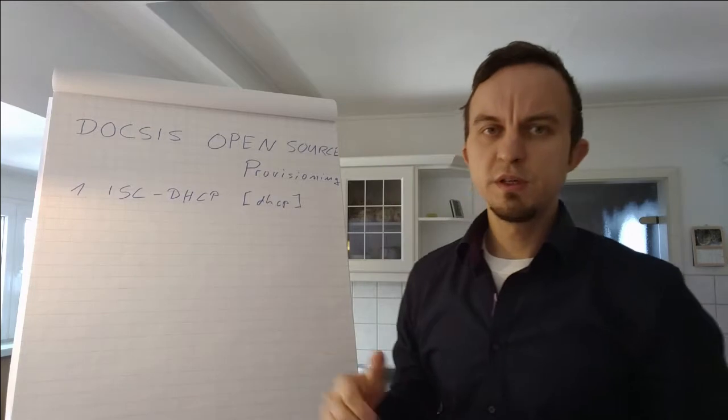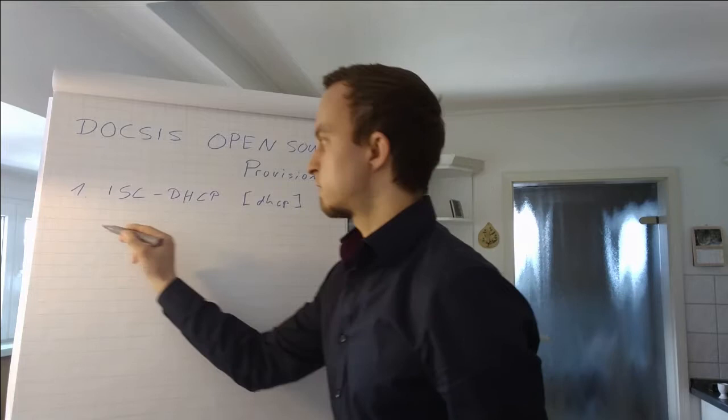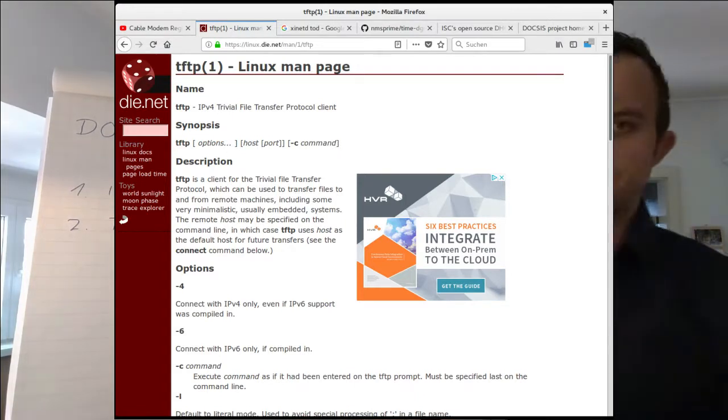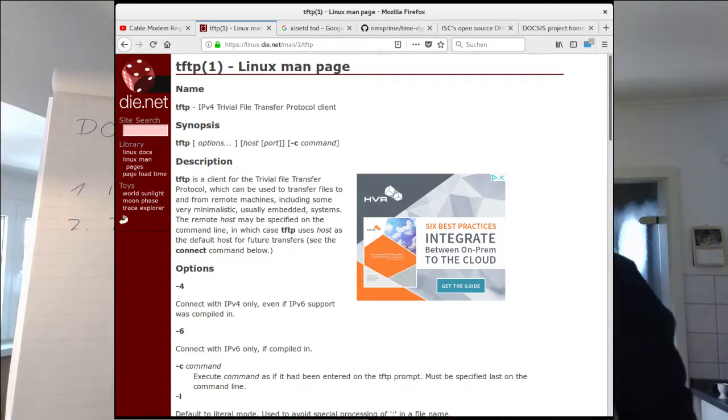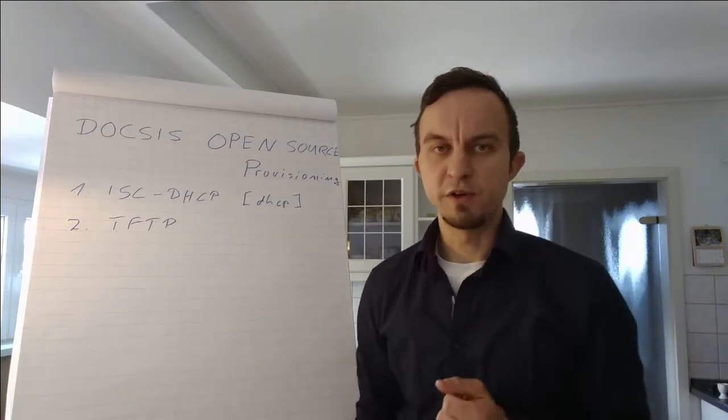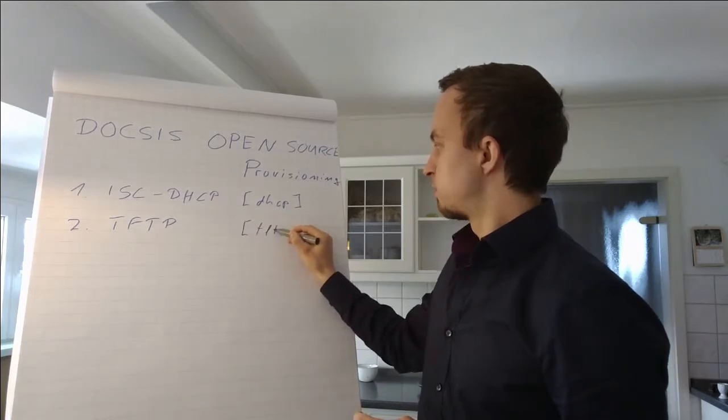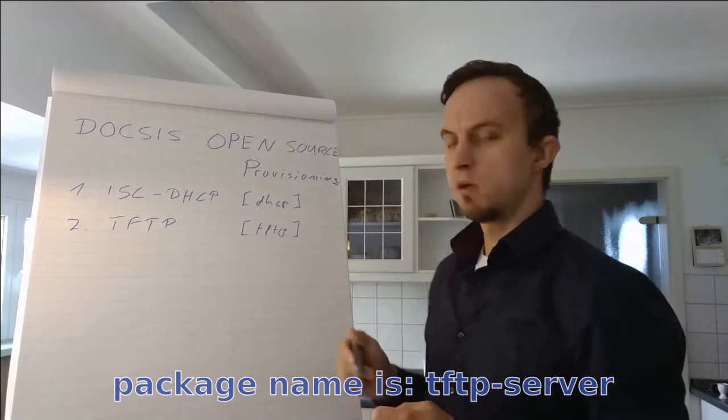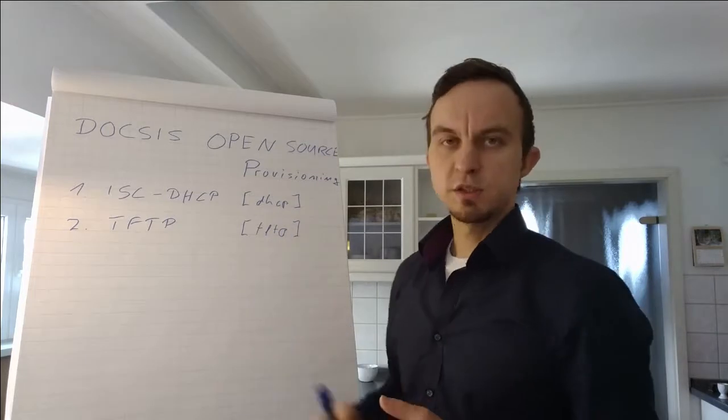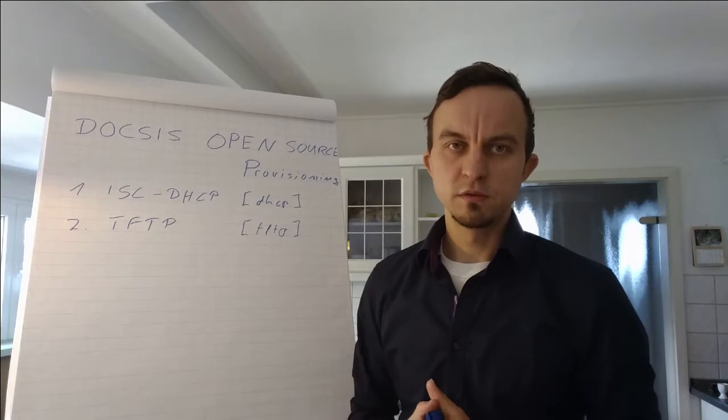The second thing that we need is the TFTP service, which is the Trivial File Transfer Protocol. This service is especially required for the cable modems to get the config file from the provisioning system. The package in CentOS is called TFTP. This is also a standard implementation, so you can just install it by yum install tftp and then you will have the TFTP service running.